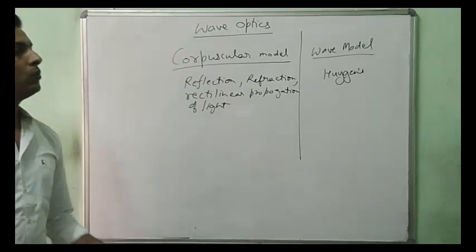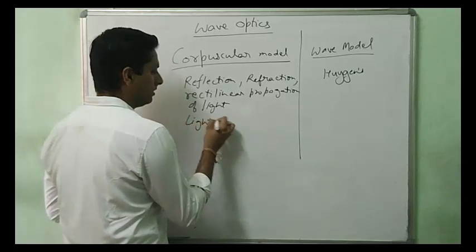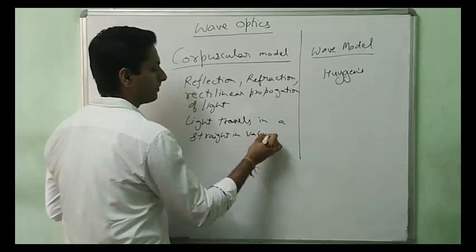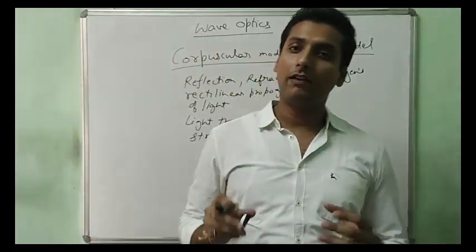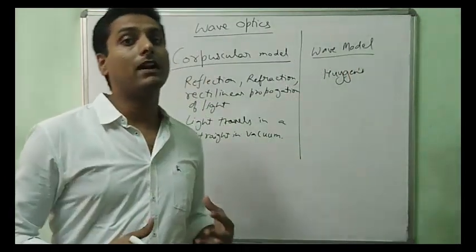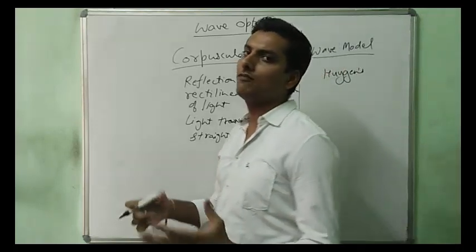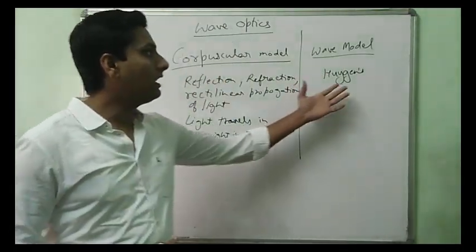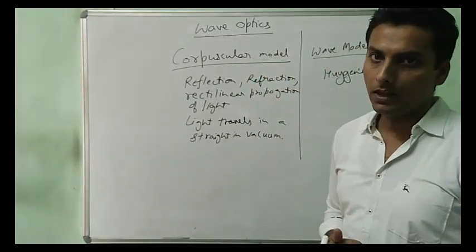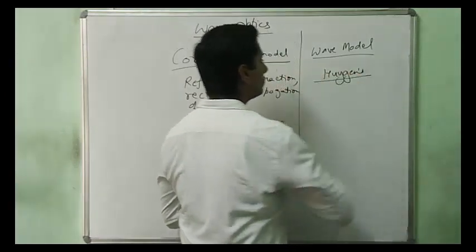This was basically the concept that light travels in a straight line in vacuum. Newton was having great authority at that time, so every physicist community was totally ready to agree with Newton in every respect. But when Huygens came, he told that whatever Newton is explaining is basically due to the particle nature of light, and light also has a wave nature.